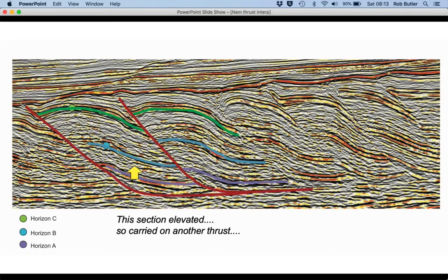So this section is elevated, so we would infer that there's another thrust that comes through something like this, and again we can snap the blue and mauve horizons down onto the fault planes like this.